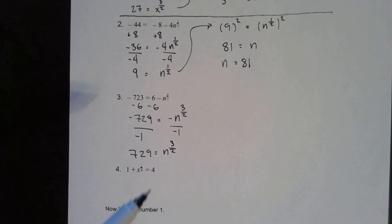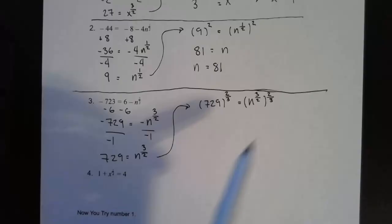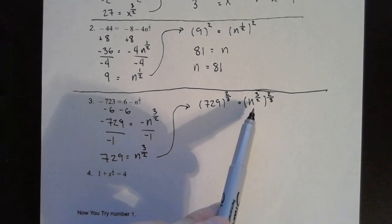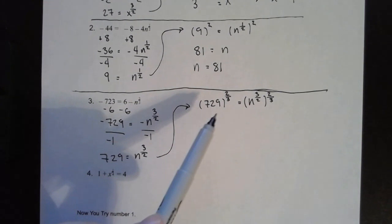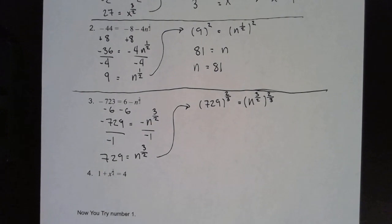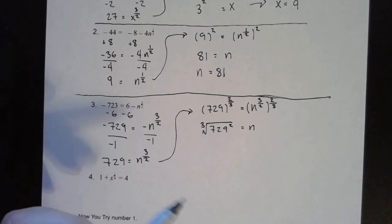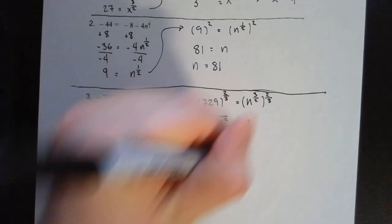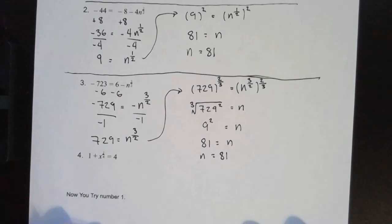I need to raise both sides by 2 thirds — 2 thirds is the reciprocal of 3 halves. On the right side our exponents cancel each other out: 3 halves times 2 thirds is just 1. On the left side I write 729 to the 2 thirds in radical form. The cube root of 729 is 9, so we just have 9 squared equals n. 9 squared is 81, so we end up with the same answer as the last one: n equals 81.